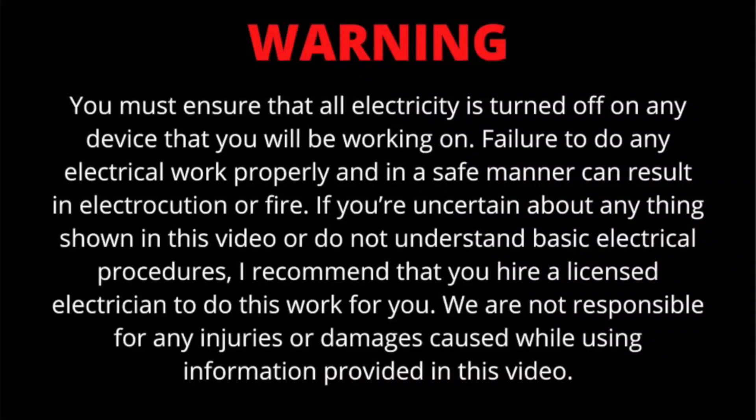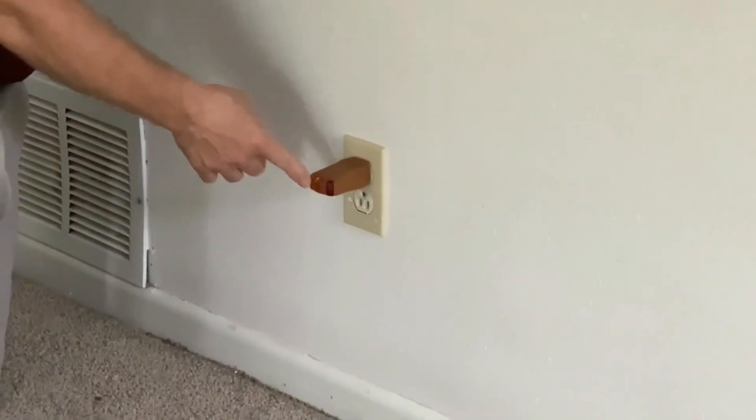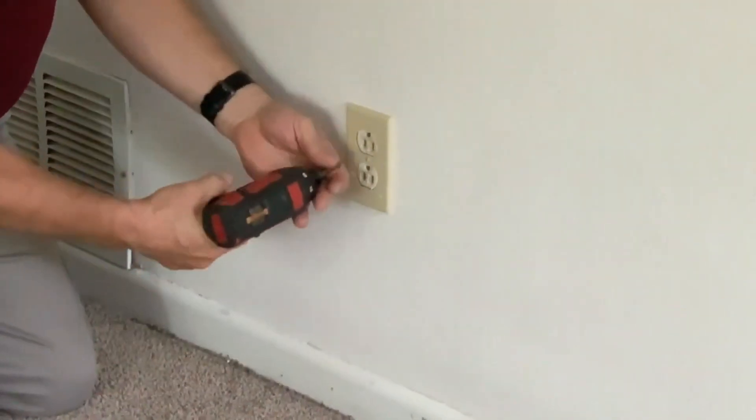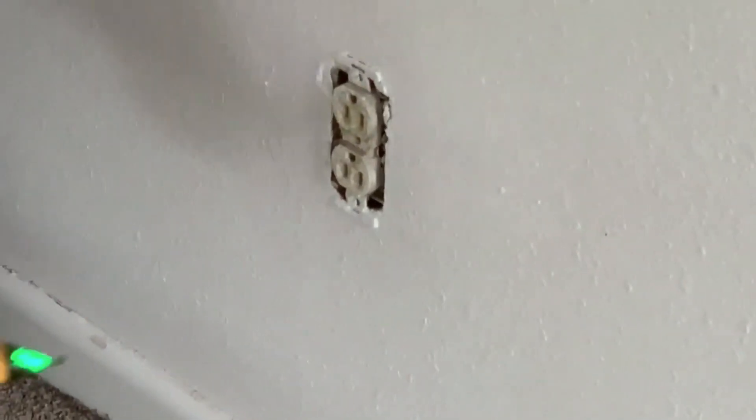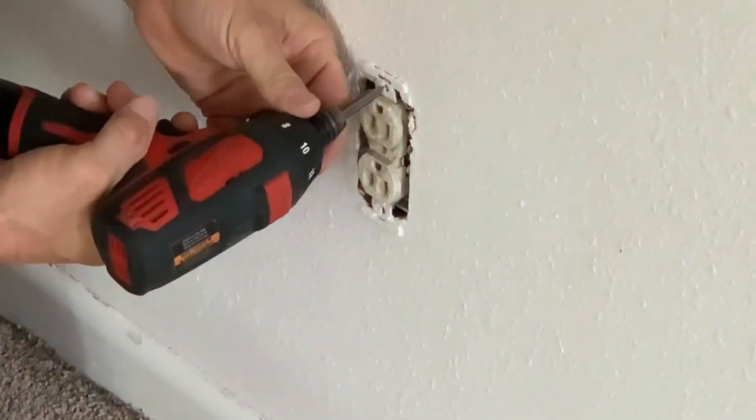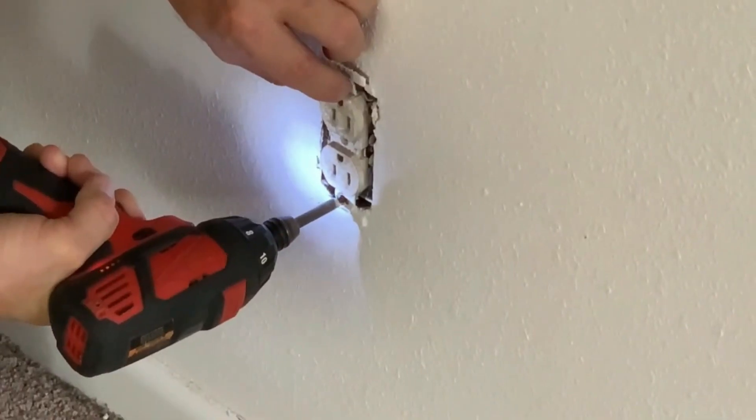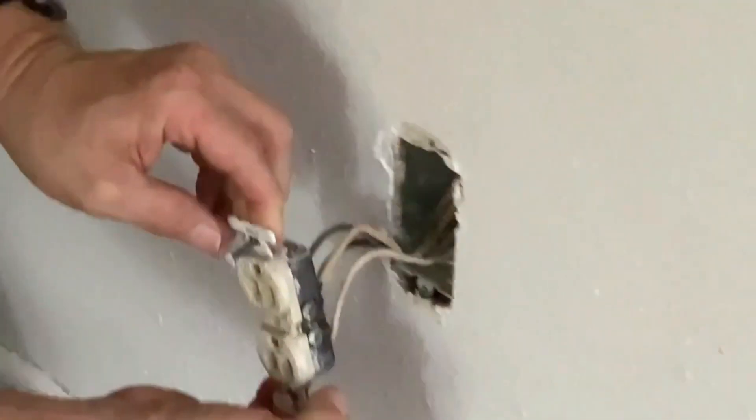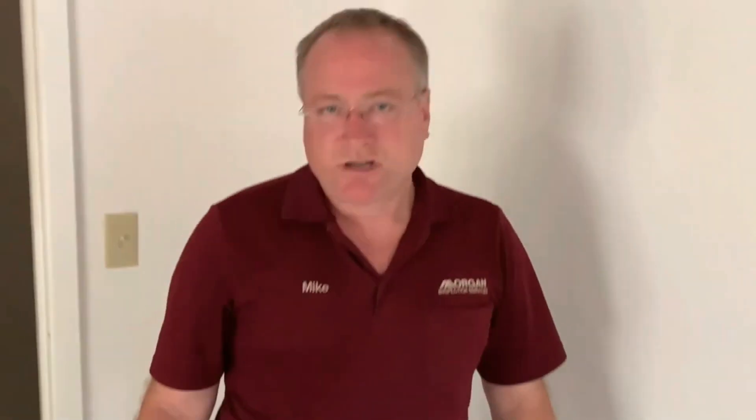So let's get started. What I want to do now is start finding the first outlet in the chain and as you can see we have turned power off. This is dead. Before I mess with anything I do want to double check that there's absolutely no power in here. So I've got my little voltage detector and it is showing that this is dead. So I'm going to pull this out of the wall.